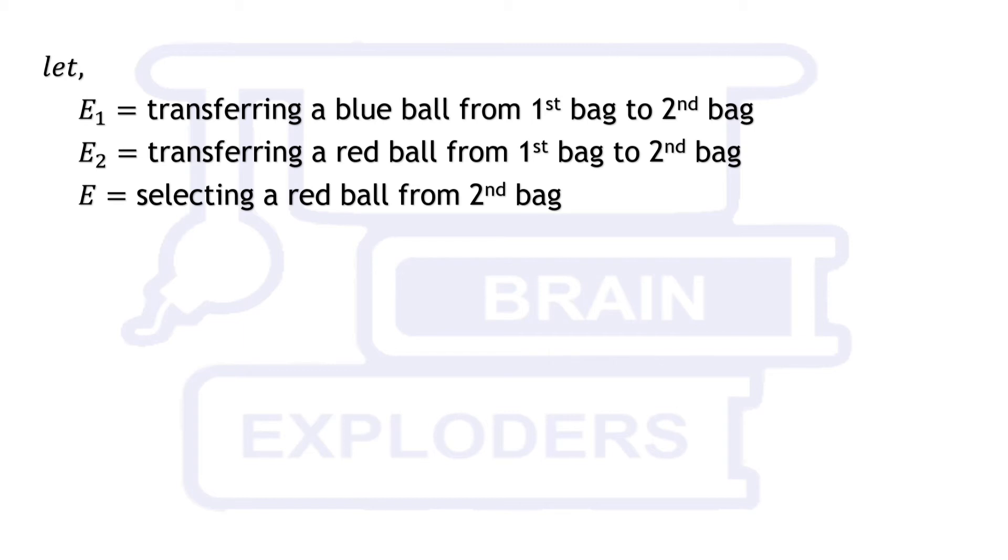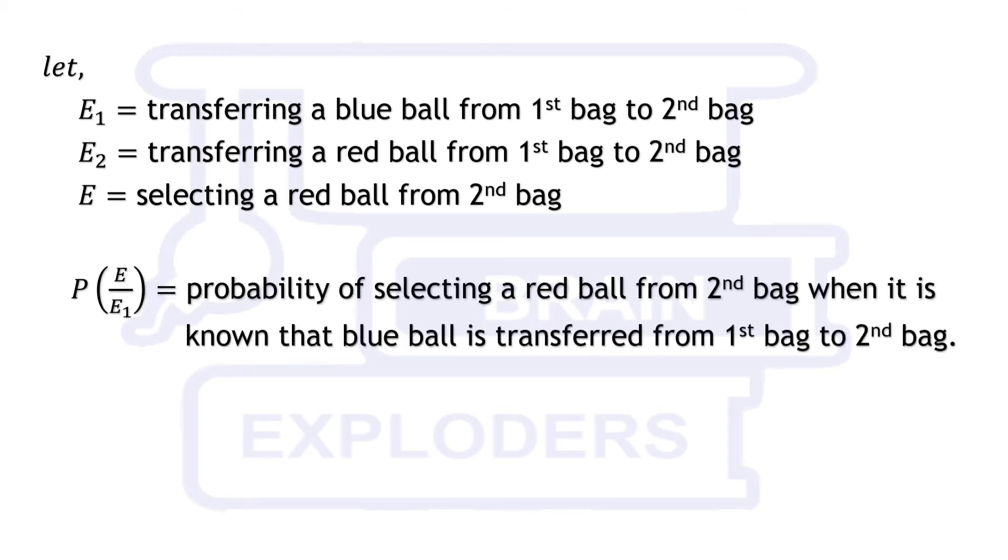So P(E|E1) represents the probability of occurring event E when E1 already happened, means the probability of selecting a red ball from second bag when it is known that blue ball is already transferred from first bag to second bag.